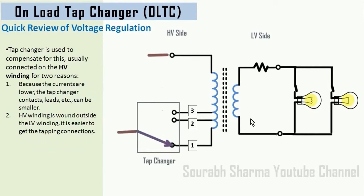This is always done at the high voltage winding because of two main reasons. Number one: the HV winding is always wound on the outer side, therefore it is easy to access. Number two: at the HV side, the winding current is comparatively low compared to the LV side, so it is easy to make and break the circuit without heavy sparking. As it is highly desirable that continuity of electrical supply must always be maintained, the tap changing process is required to be done when the transformer is on.